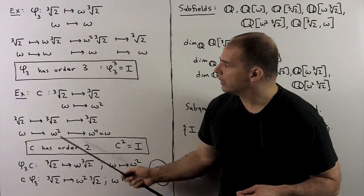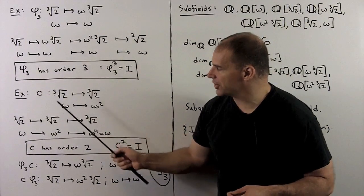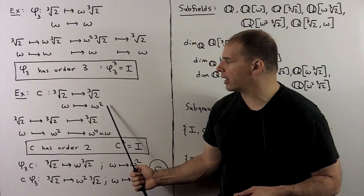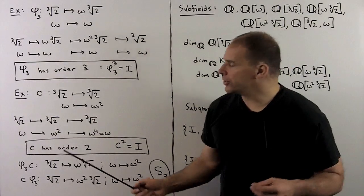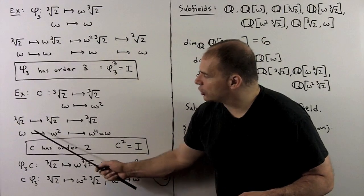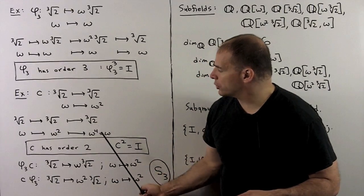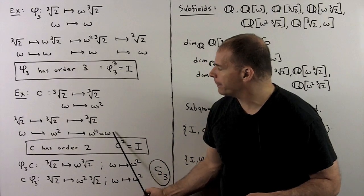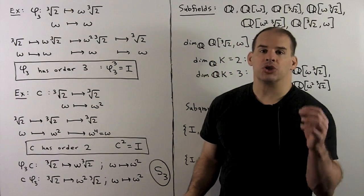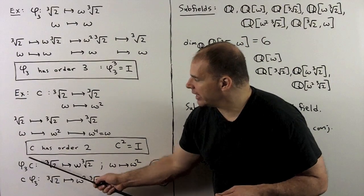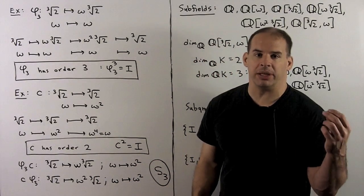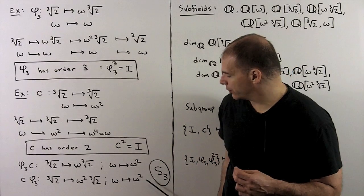On the other hand, let C denote complex conjugation: it fixes ∛2 and sends ω to ω². Tracking ω: ω → ω² → ω⁴ = ω, so C has order 2. It is straightforward to check that φ₃ and C do not commute. So the automorphism group has 6 elements and is not abelian — that means it is isomorphic to S₃.